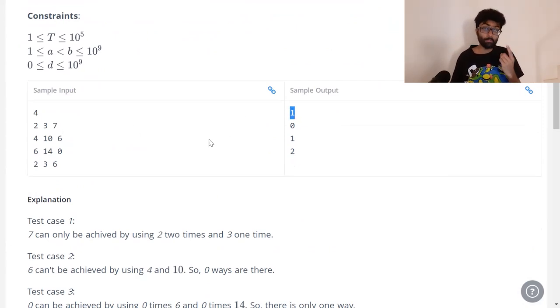Four, ten, six. In how many ways can I combine four and ten to get six? Obviously I can't use a weight of ten to get six, so you've got to use only the four. But however many fours you put together, you're never going to get six, which is why the output is zero.